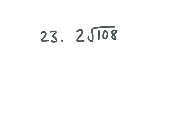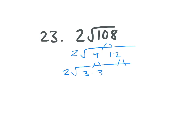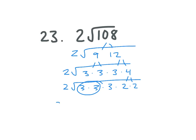We have 2 square root 108. Can we break down 108? We get 9 and 12. In 9, we have a pair of 3s. In 12, we have 3 and 4, which breaks into 2 and 2. So we have 3 times 3 times 3 times 2 times 2. We have a pair of 3s and a pair of 2s. Taking out the 3 and the 2, and multiplying by the 2 already on the outside, we get 12 on the outside. What's left inside is 3. So we get 12 square root 3.